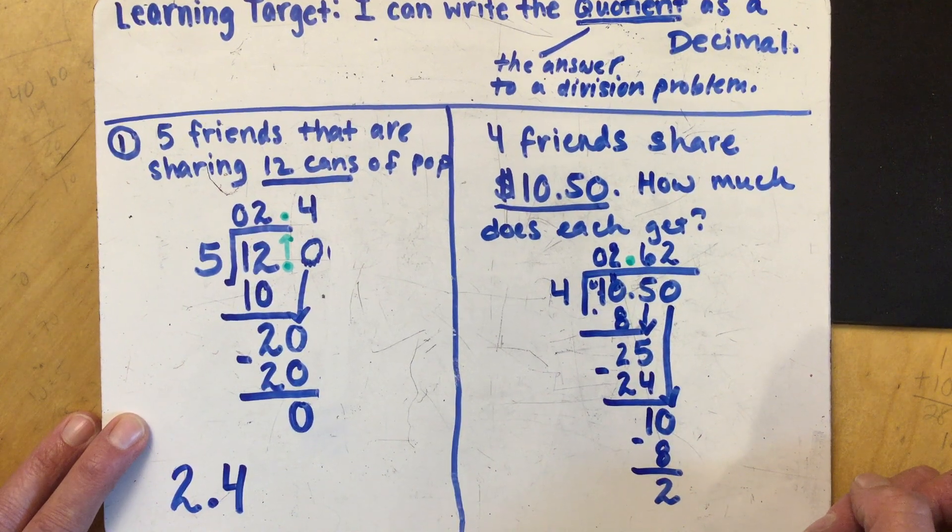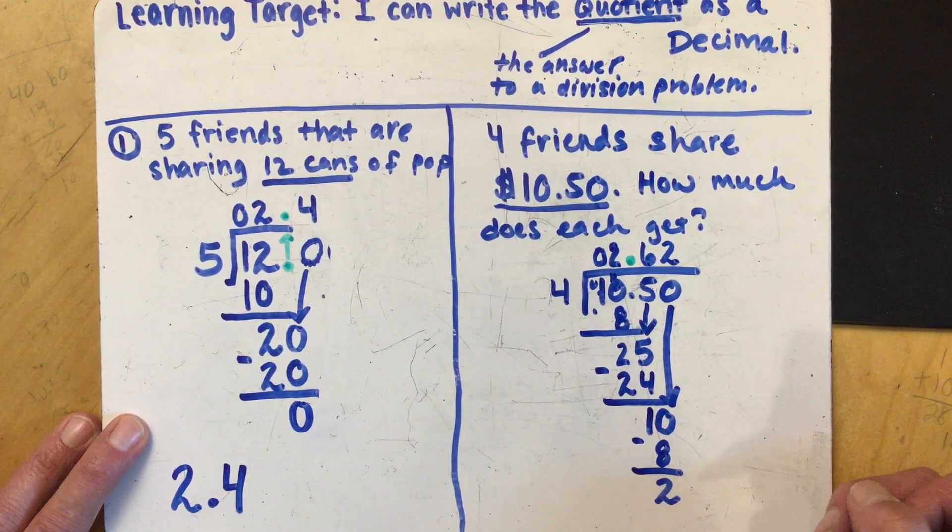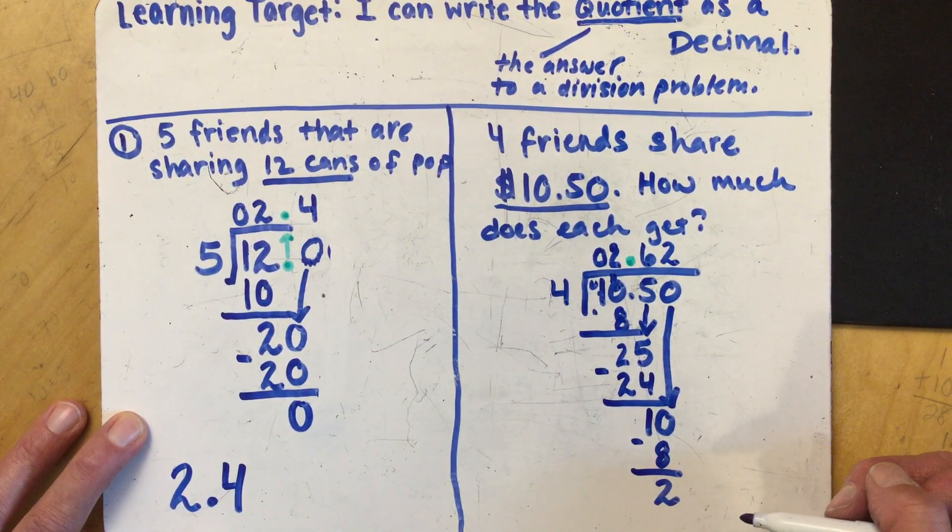Now this time I still have a remainder so I'm in a situation now where I'm trying to get rid of that. So now I do have to add a zero.